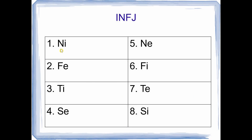Before we get into the analysis, let's quickly go over the function stack. First slot: Ni — I look for conceptualization, that bigger picture, how things all come together through synthesis, that deeper meaning, that global encompassing unifying mode of perception. Second slot: Fe — harmony, considering others, talking about others, giving attention toward others, group dynamics.